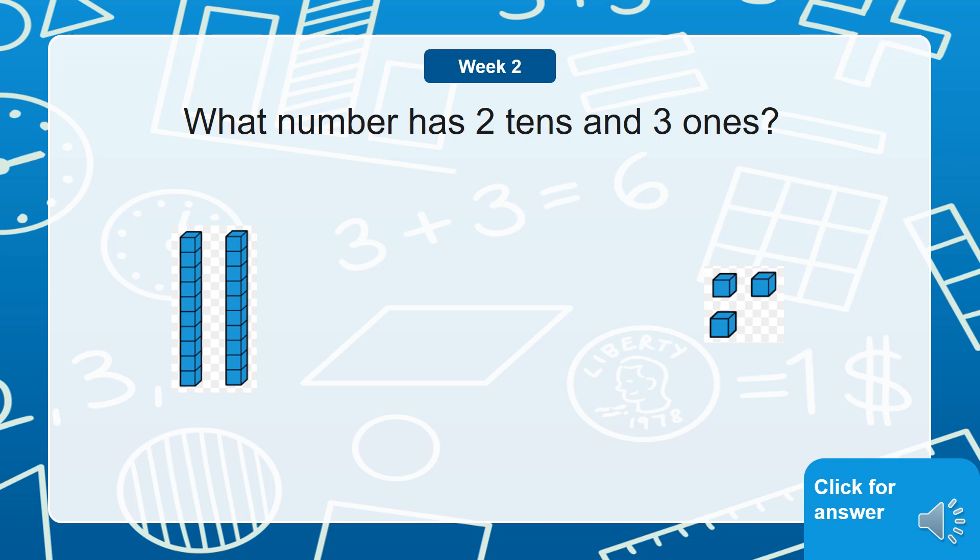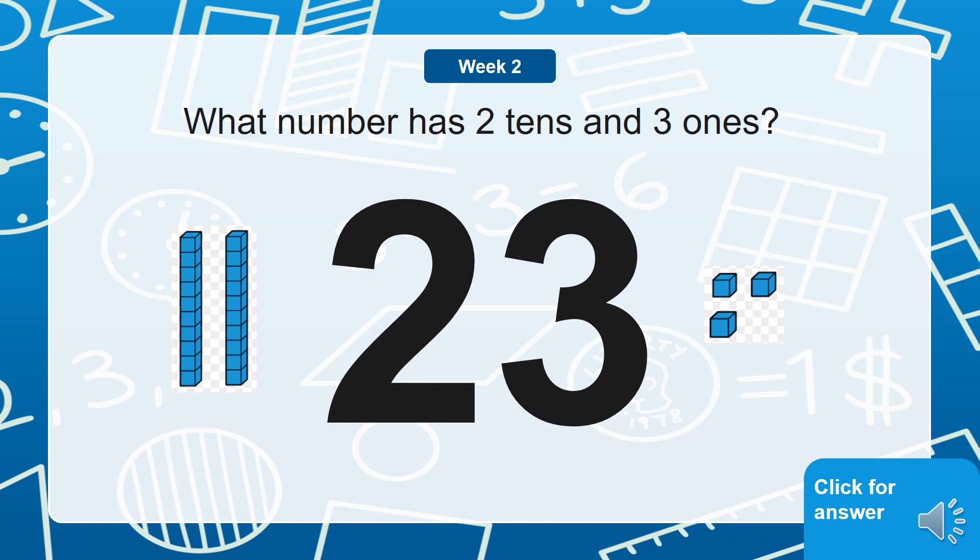And then 10 more. And over the other side, how many ones are there? One, two, three. Count together all of those tens and those three ones and see if you can figure out what the answer is. Remember write your answer down for your teacher. Did you get 23?